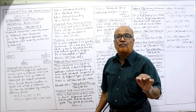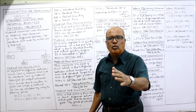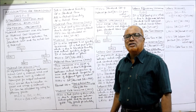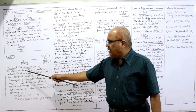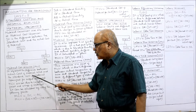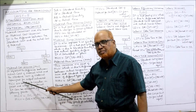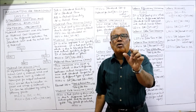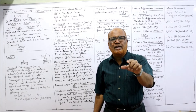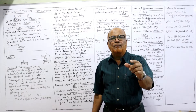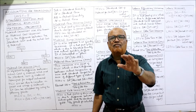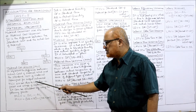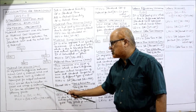Every variance has a formula: MCV, MPV, MUV, MMV, MYV. First, material cost variance, known as MCV. It represents the difference between the actual cost of material used and the standard cost of material specified for actual output achieved. Simply, MCV is the difference between the actual cost of material and the standard cost of material for actual output.